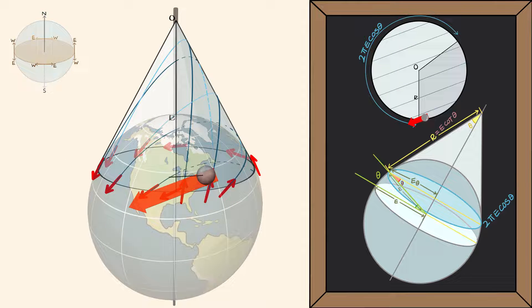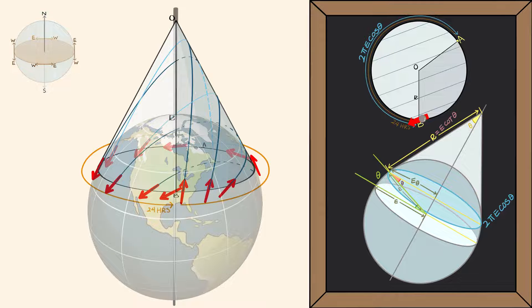Coming back to points A and B, by the time the pendulum reaches point B, 24 hours will have passed and Earth will have made a full rotation. But notice that our pendulum has not yet completed its rotation.